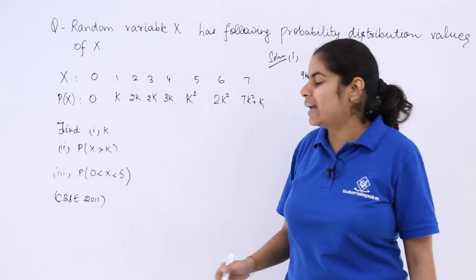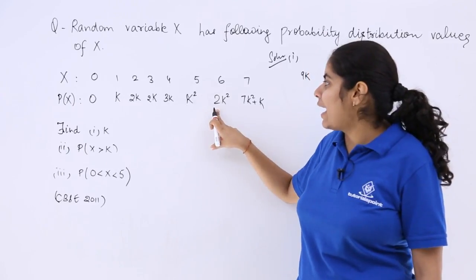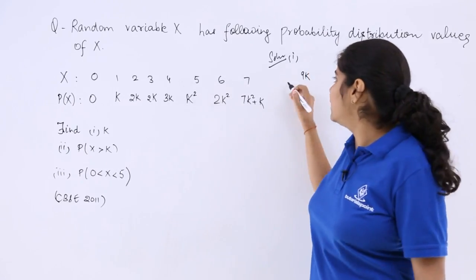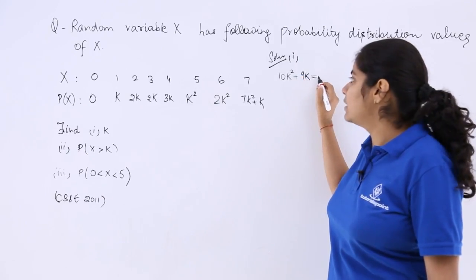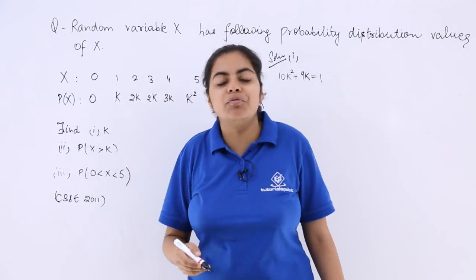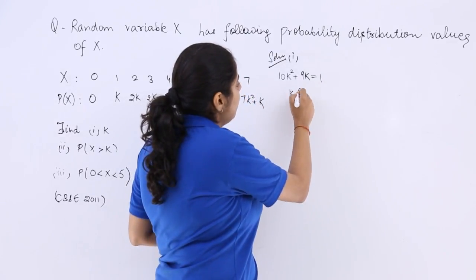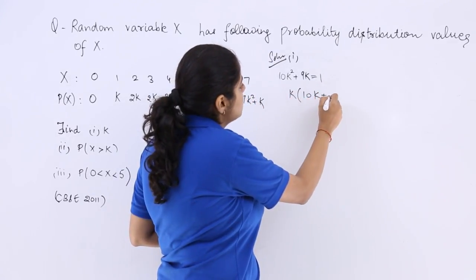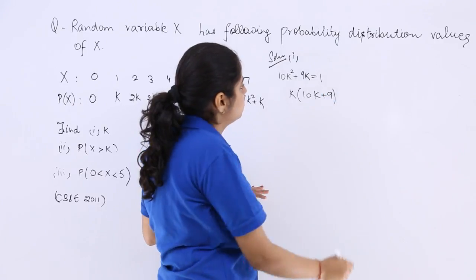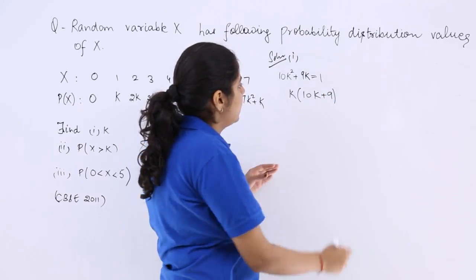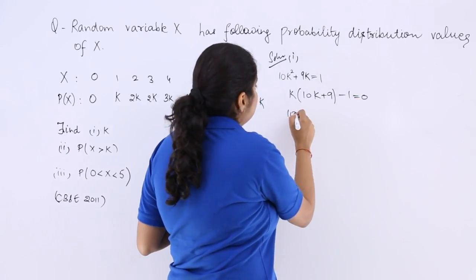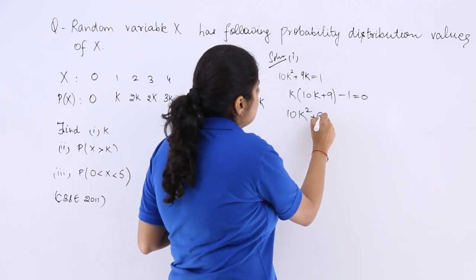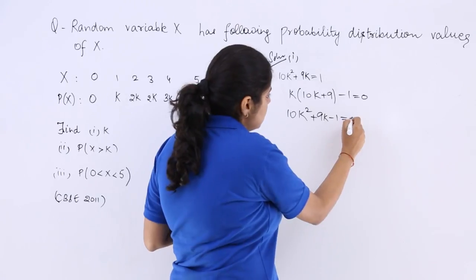Then again add all the k square terms. So k square and 2k square plus this makes it 10k square. And these both things add up to 1 because the sum of all probability distribution is 1. So let's take k common. So this becomes 10k plus 9. And I am so sorry, this shouldn't be taken as common indeed. Let's do it this way. This will become more easier. This is 10k square plus 9k minus 1 is equal to 0.